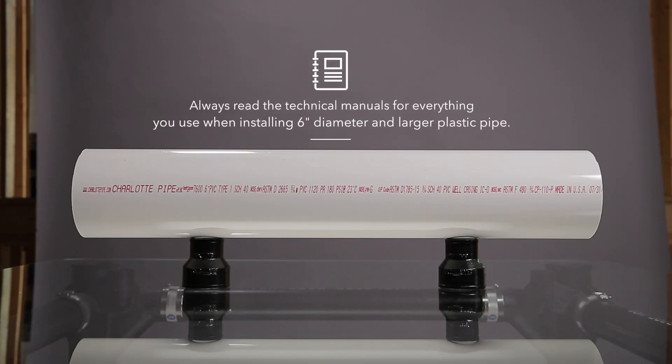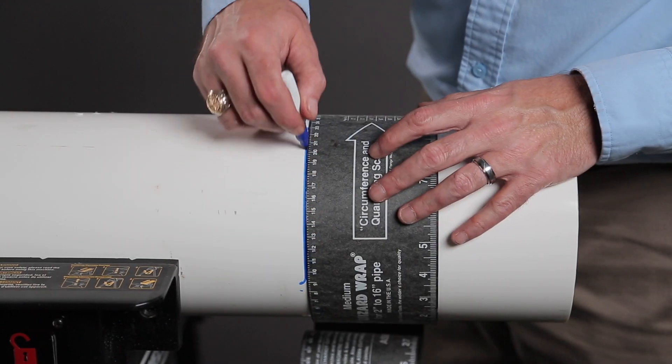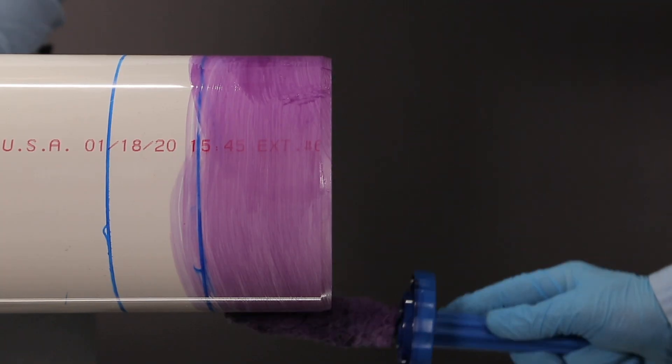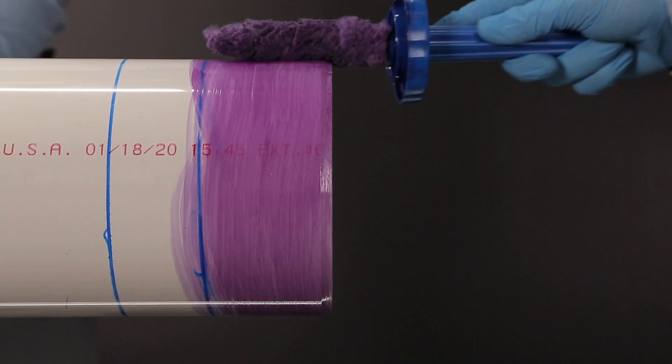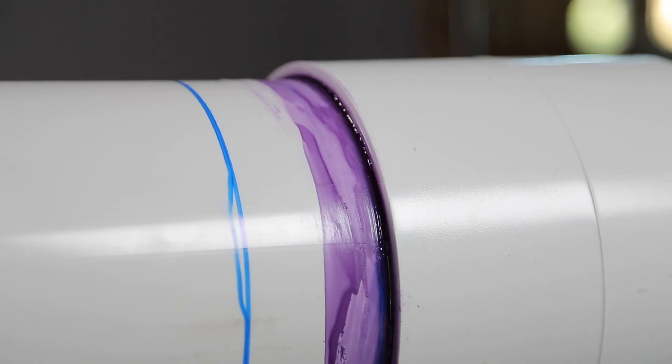Always read the technical manuals for everything that you use when installing six inch diameter and larger plastic pipe. If you install the pipe correctly in accordance with the technical manual using compatible materials and if you pay attention to the details, you'll have a world-class plumbing system that should provide years of solid performance.